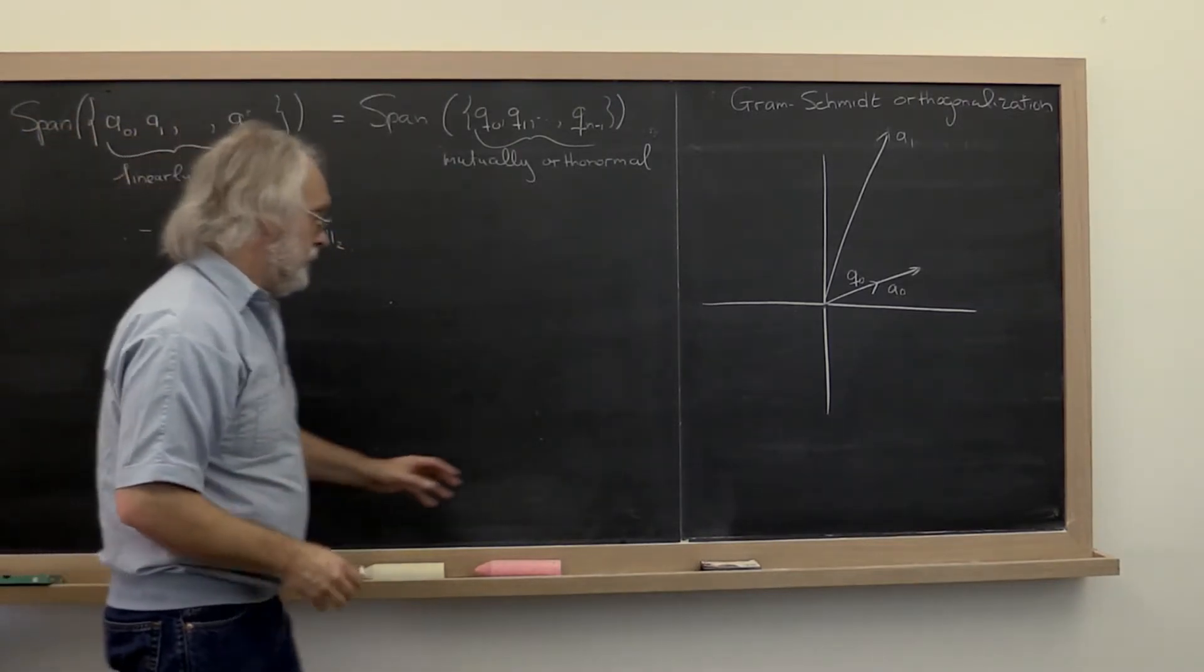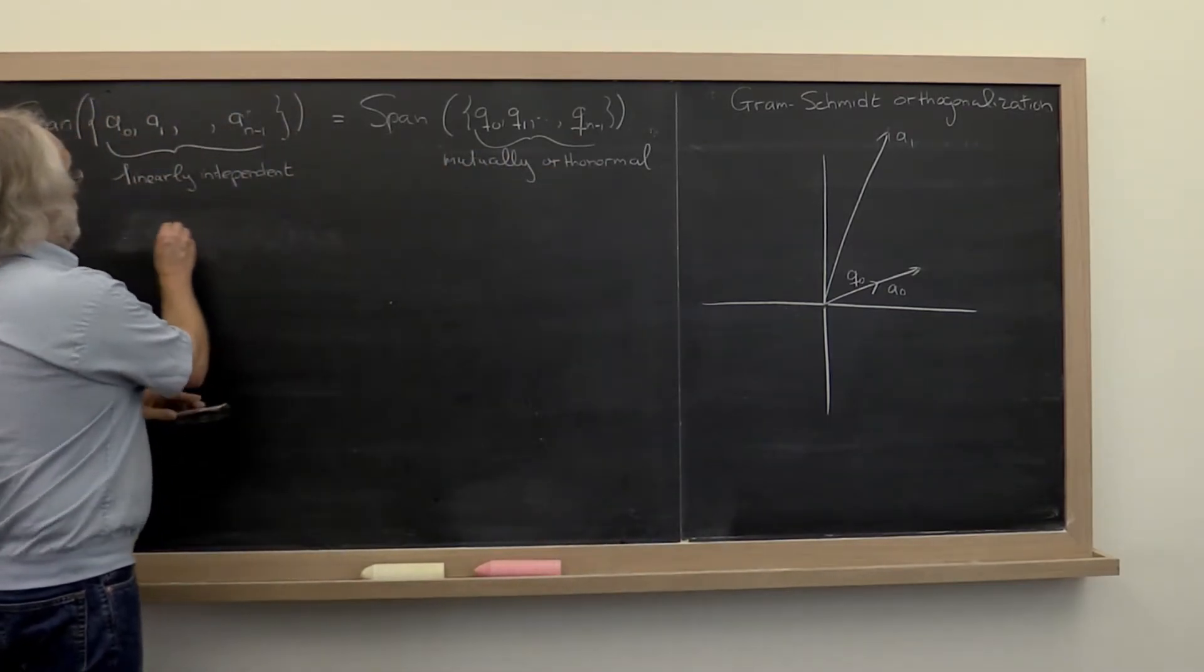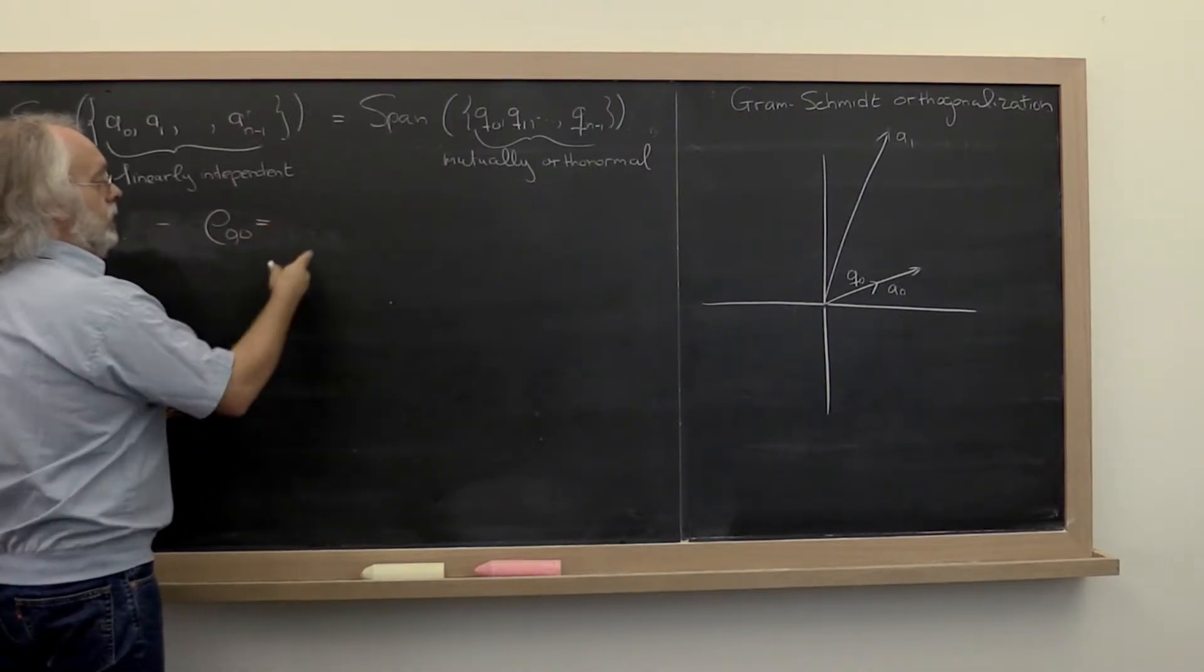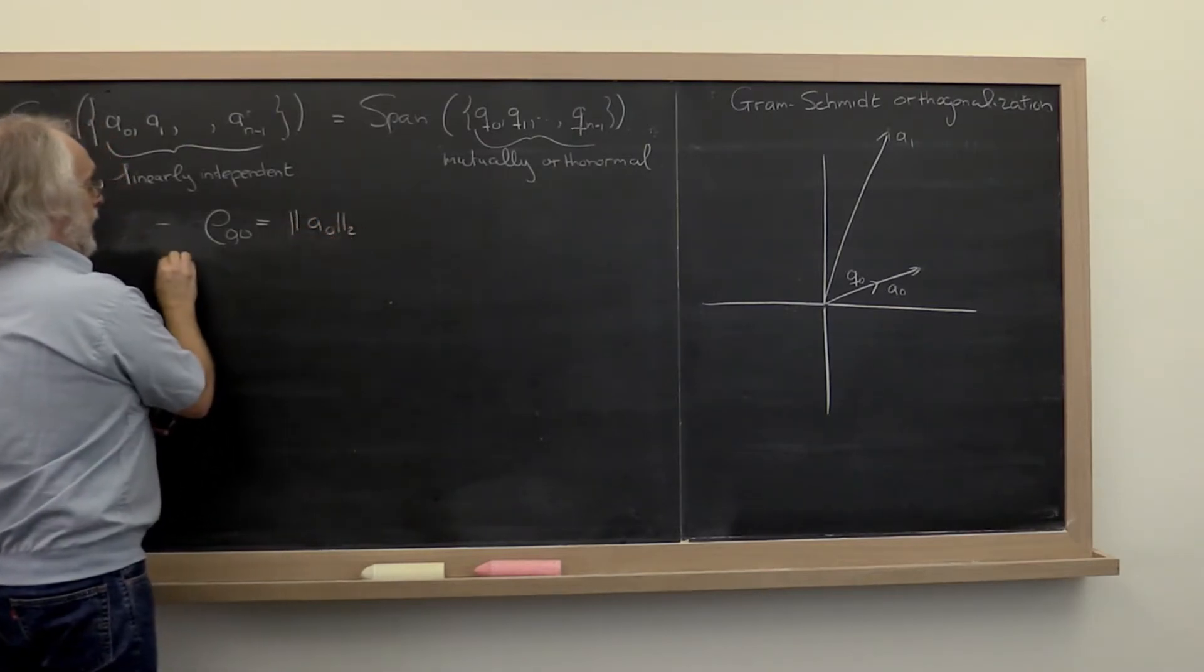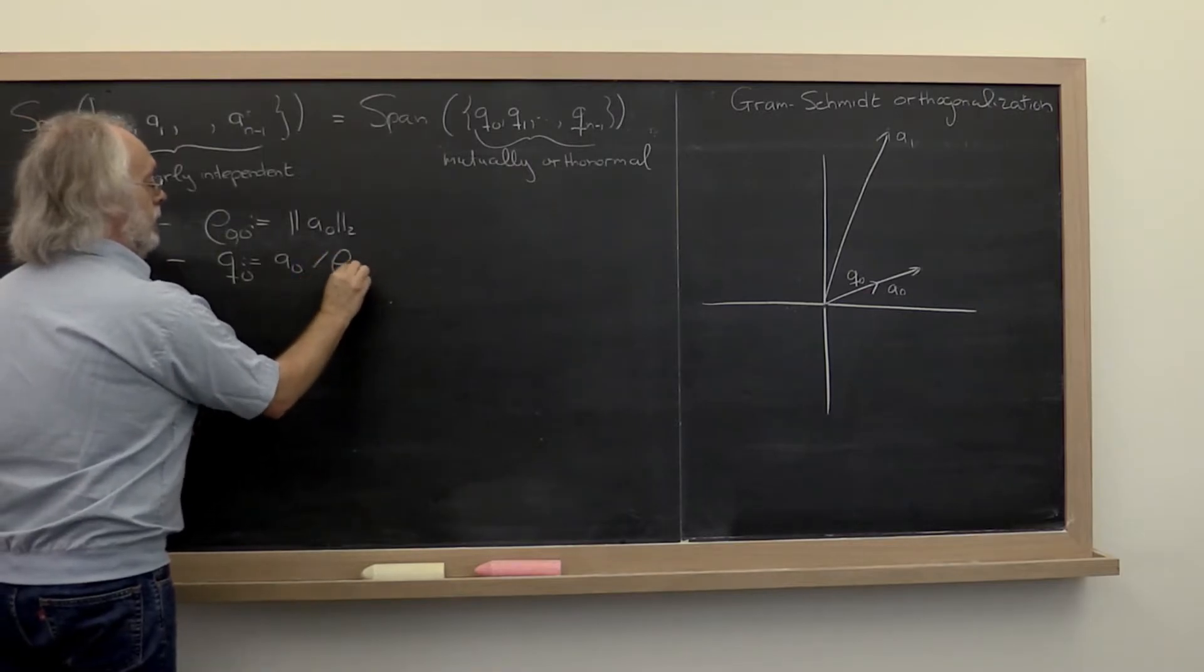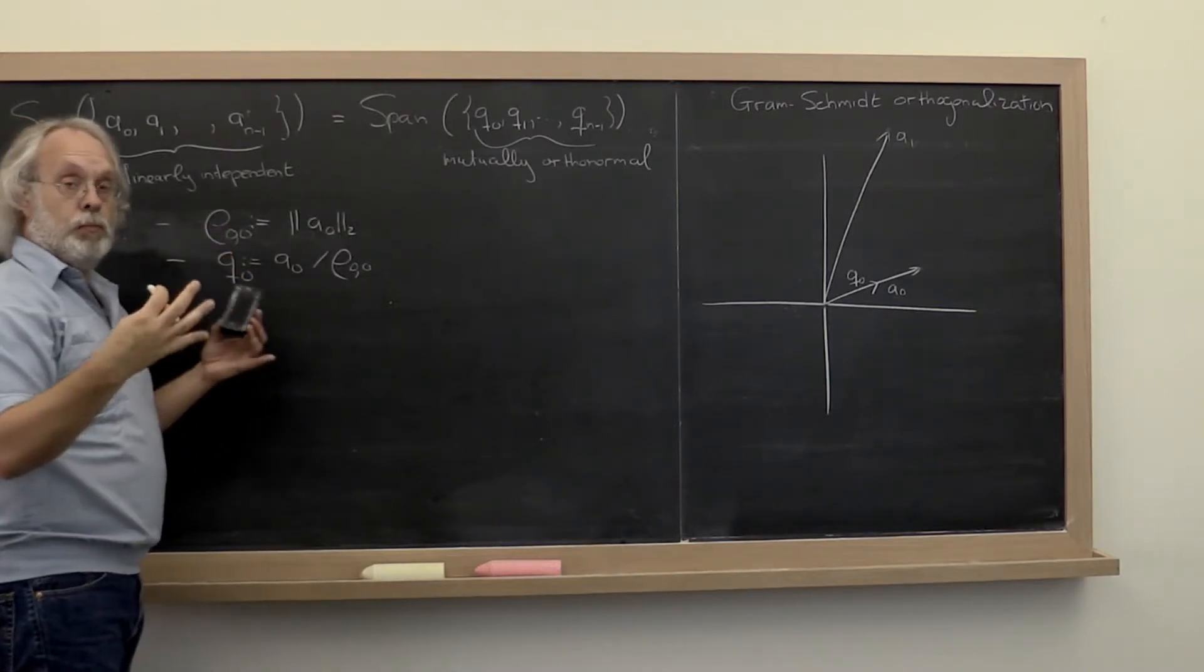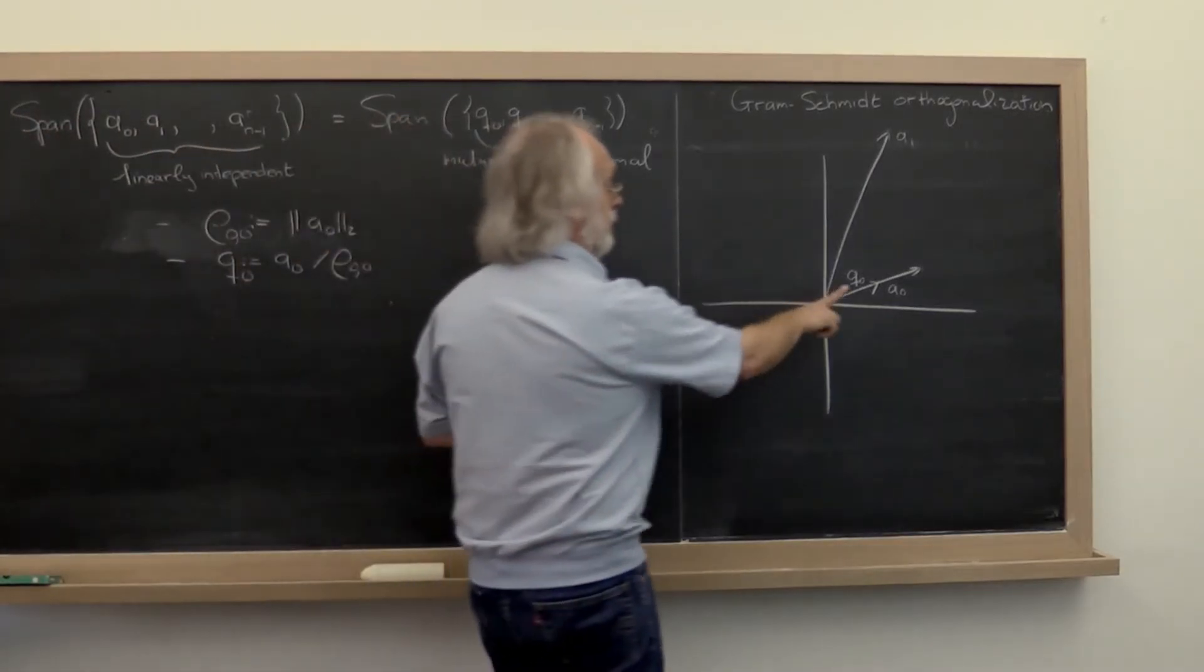But we like to actually do this slightly differently. We like to do this in two steps. First compute the length of a0, and then set q0 equal to a0 divided by its length. This is rho(0,0). And the reason why we take the Greek letter rho will become obvious in a little bit. So at that point we have this vector here.